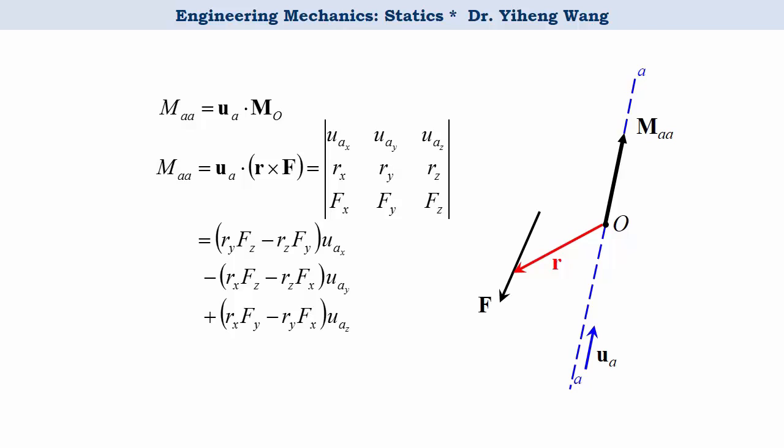Also, we know that dot product is a scalar. Therefore, if you want to find the moment along A A axis as a vector, you need to attach the unit vector U A to it.